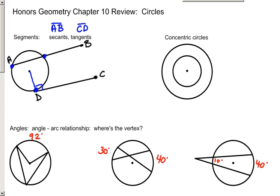Another important relationship is the idea of concentric circles. Concentric circles have the same center — kind of creates a bull's eye shape. There are lots of different relationships that we can build upon. One common application was in reference to a segment that was tangent to the smaller circle and a chord of the larger circle.